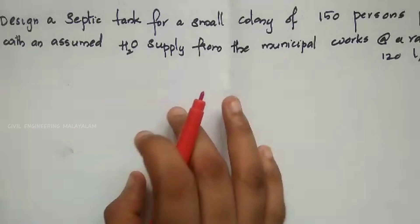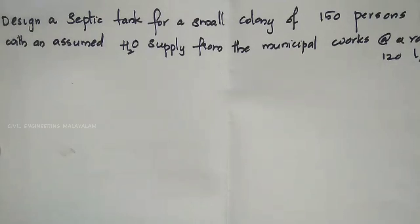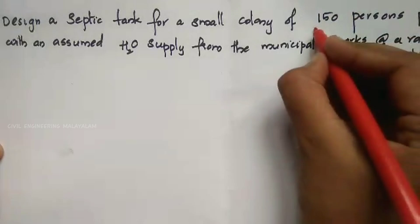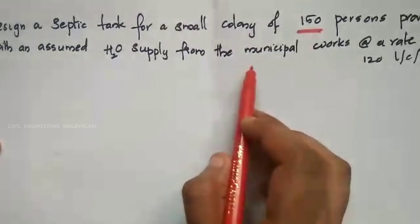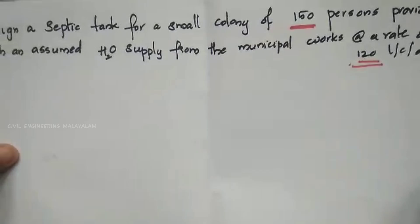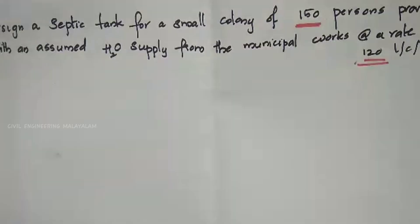First, we are going to design a septic tank for a small colony of 150 population, provided with an assumed water supply from the municipal works at a rate of 120 litres per capita per day. We are going to discuss these two values and the design considerations.